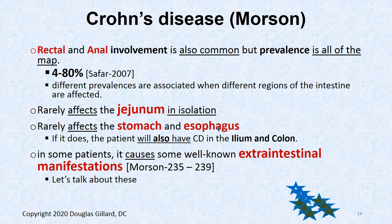Anal and rectal involvement is common, with prevalence estimates ranging from 4% to 80% — probably around 40% of people have some involvement, whether a fistula or skin tags. The jejunum, stomach, and esophagus can be affected but are rare.